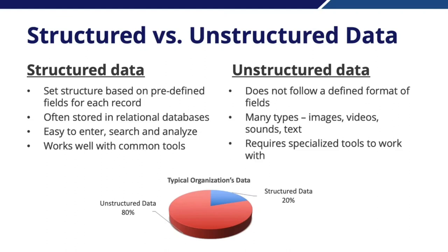If we look at a typical organization's data, roughly 80% is considered unstructured — things like images, video, or text such as emails or slides. Only about 20% is structured data. When we work with machine learning, we'll work with both types, and we'll often use different algorithms or approaches depending on the type of data we're working with.